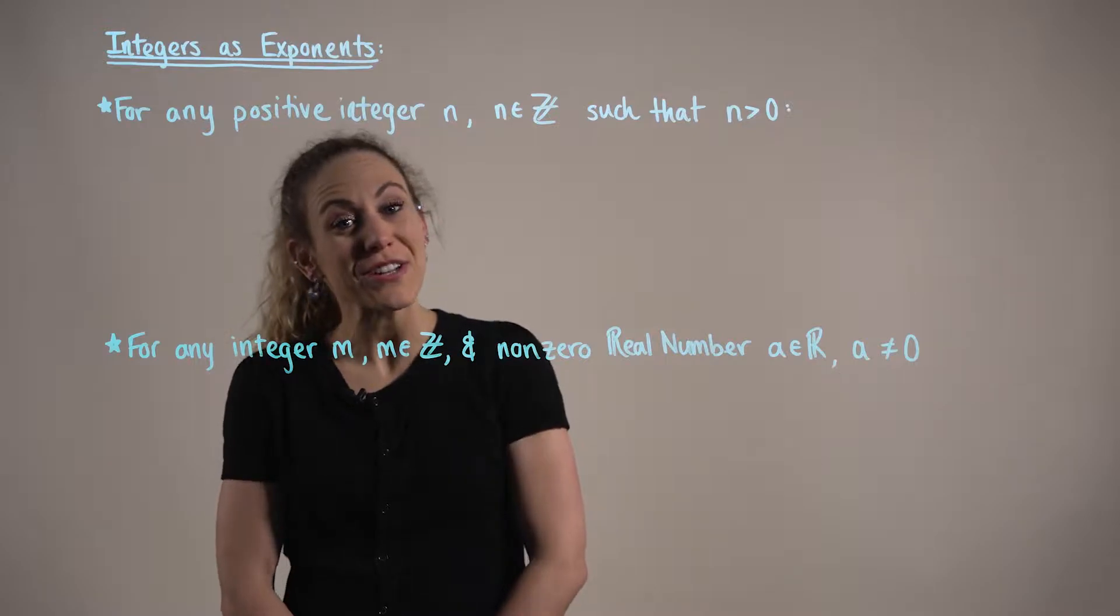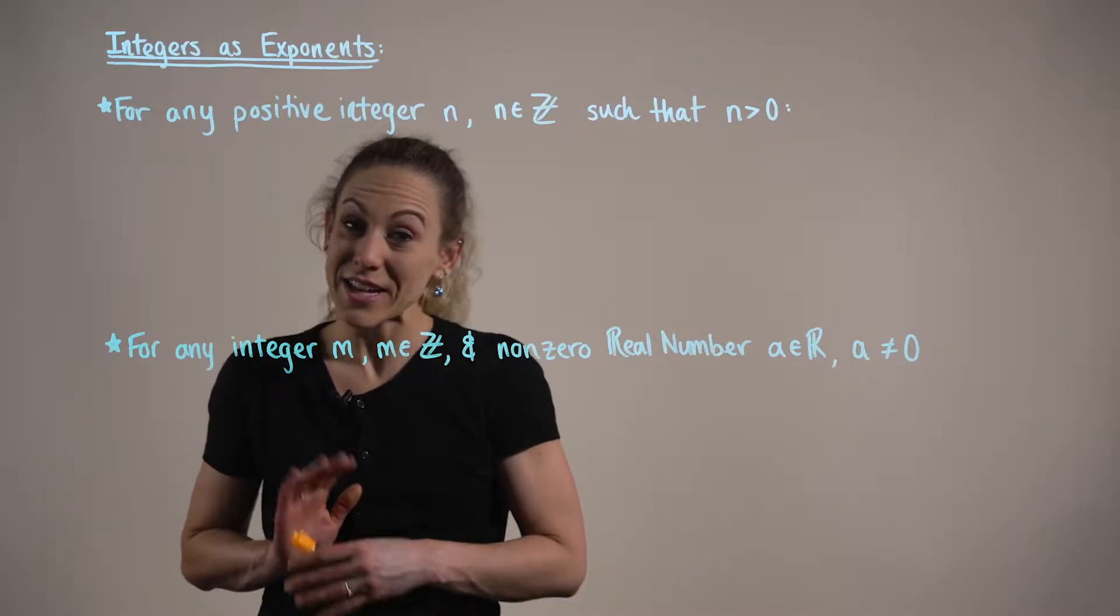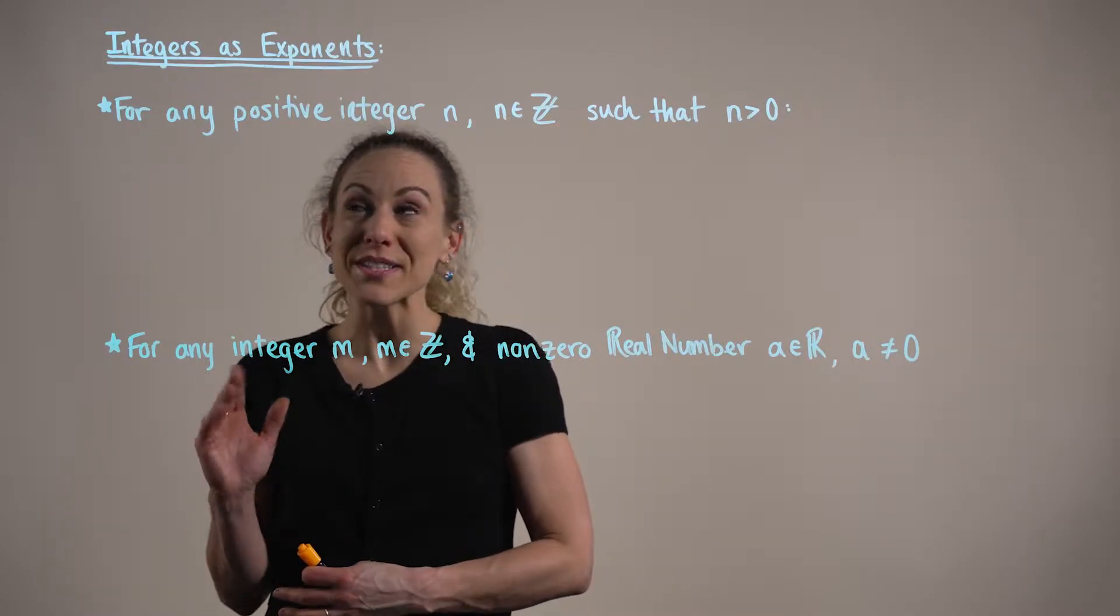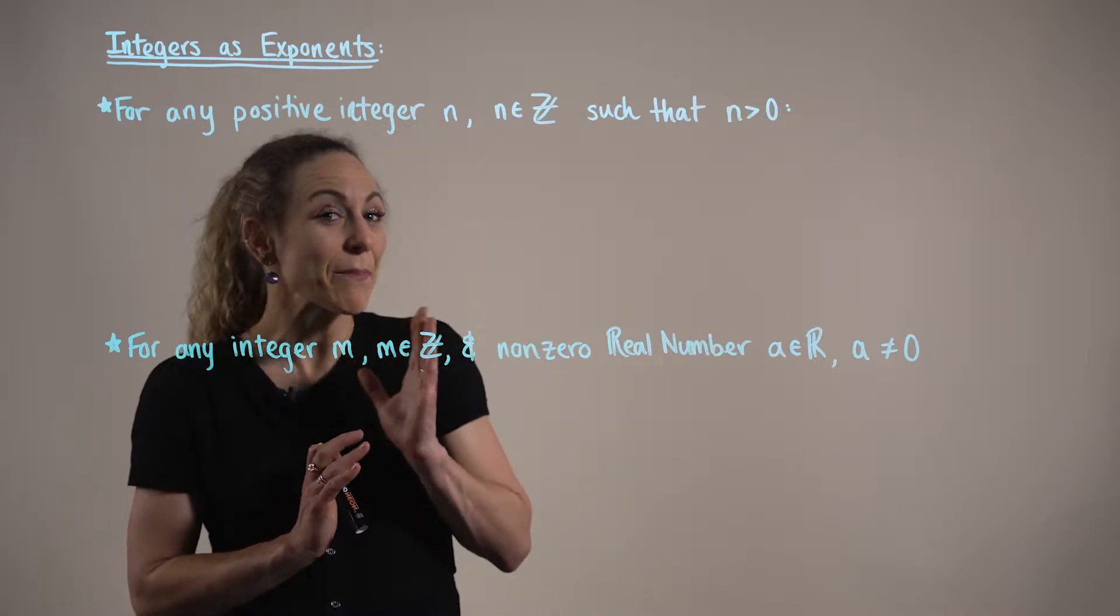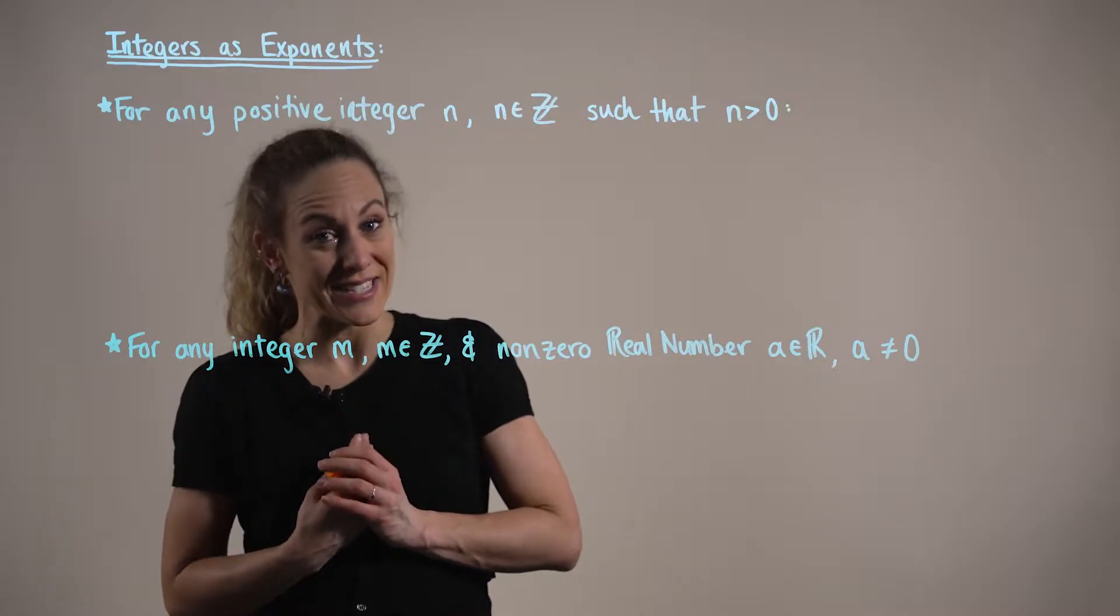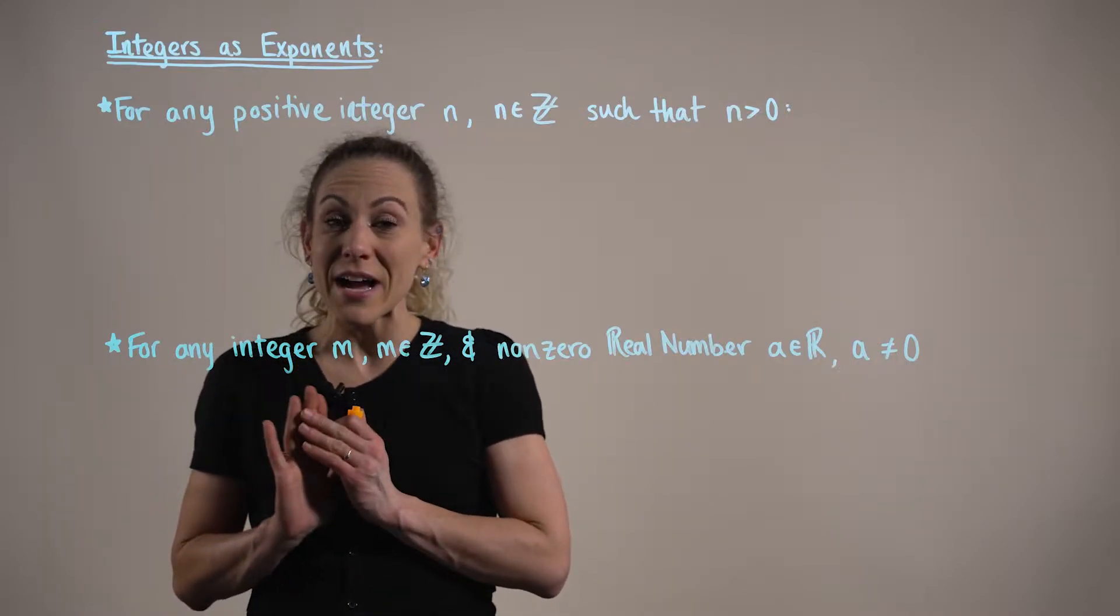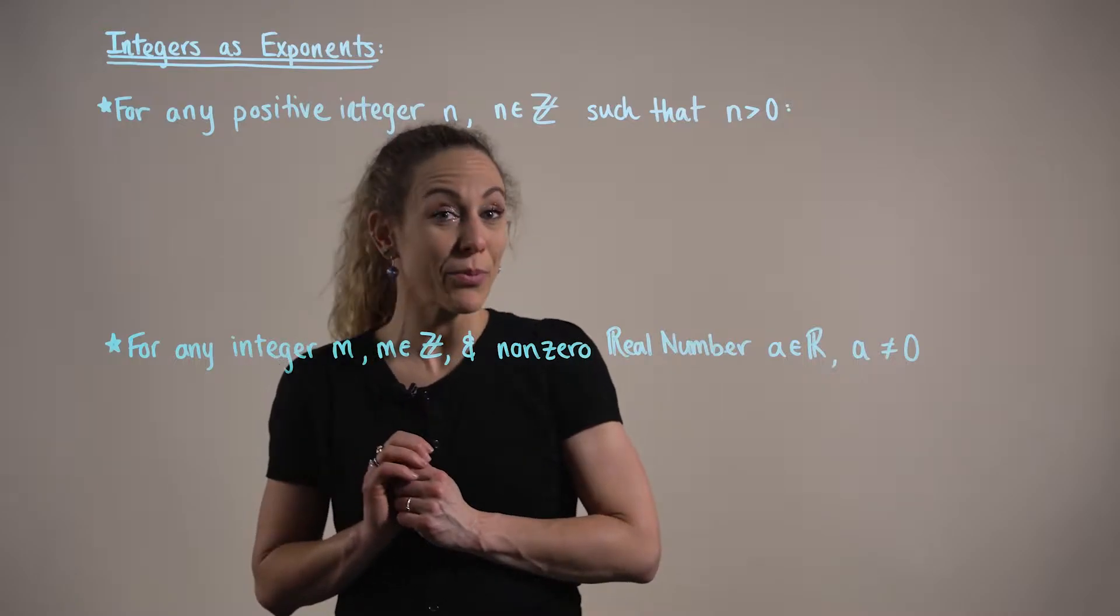Here we begin our exploration of exponents. In particular, we're focusing on integers as exponents. When a positive integer is used as an exponent, it represents the number of times a factor appears in the product.